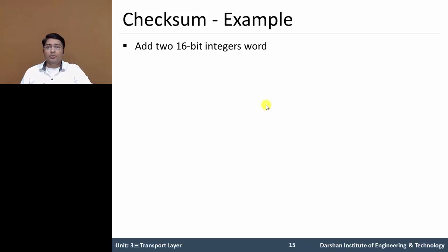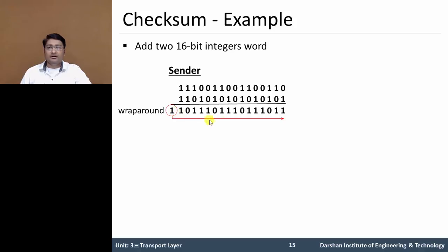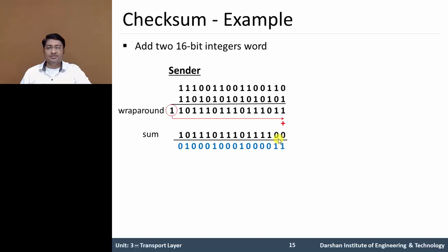In this example, we have two 16-bit integer words. At the sender side, after summing these two words, if any bit overflows, we wrap around that bit and add it to the word. Then we perform the one's complement — flipping 0 to 1 and 1 to 0 — and place this value into the checksum field.